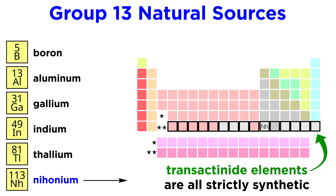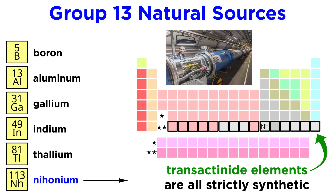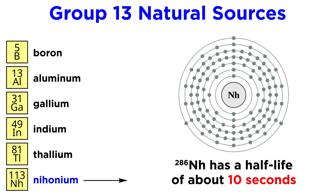Nihonium is the first synthetic element we will discuss — a transactinide element, one of many elements on the table that do not exist in nature, but was created in a particle accelerator, in this case in 2012. Its most stable known isotope, nihonium-286, has a half-life of about 10 seconds, so it has no practical applications. This will be the case with most of the transuranium elements.